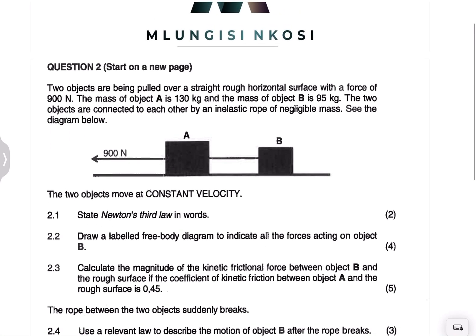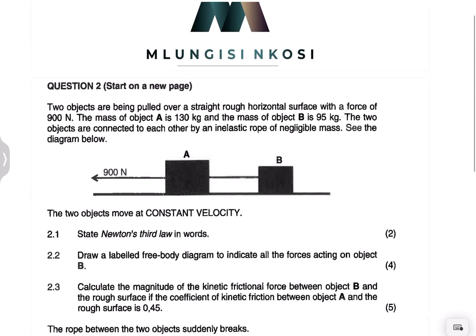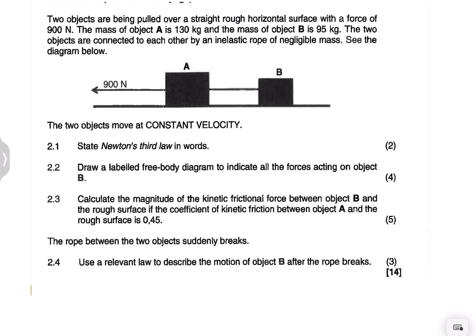We're given two objects pulled over a rough horizontal surface with a force of 900 newtons. The mass of object A is 130 kilograms and the mass of object B is 95 kilograms. The two objects are connected by an inelastic rope with negligible mass. They are moving at constant velocity, which means the acceleration is zero and therefore the net force is also zero.